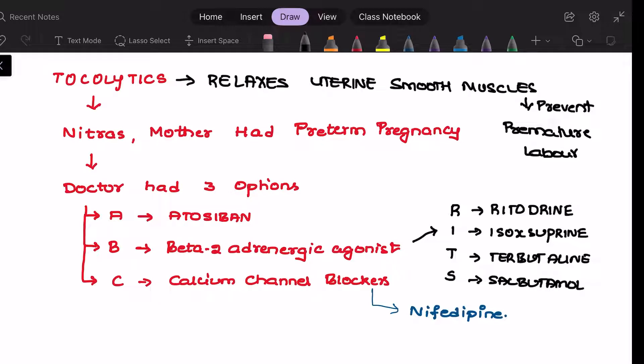How can you remember the drugs that are useful in the prevention of premature labor? You can remember it as Nitra's mother had preterm pregnancy, so doctor had three options. You can remember A, B, C.